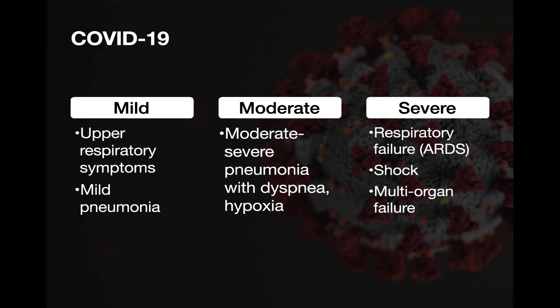About 5% of patients with COVID-19 will be severe — severely affected with respiratory failure, ARDS, shock, and multi-organ system failure. This is a concerning cohort because in patients with severe disease, there's an estimated 49% mortality — data coming out of the CDC. This is the population where we're going to spend a ton of medical resources trying to identify and mitigate the effects of the disease.